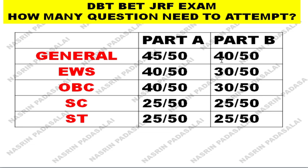So totally for general category you will be getting around 230 marks. For SC and ST candidates, out of 50 questions if you attempt 25 questions both in Section A and Section B, that's well and good and you can clear your examination. So this covers the minimum questions you need to attempt in order to clear the DBT BET JRF examination.